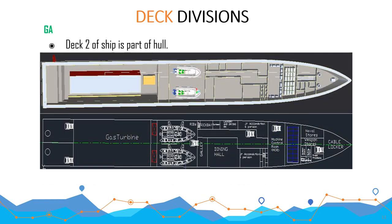This is deck number 2. This is the 3D and this is the 2D general arrangement plan. Mostly 2D general arrangement plans are preferred. This is the accommodation portion, dining hall, and galley — the galley is the area where food is made, and the dining hall is for eating. This is the gas turbine area. These arrows indicate stairs going downward.